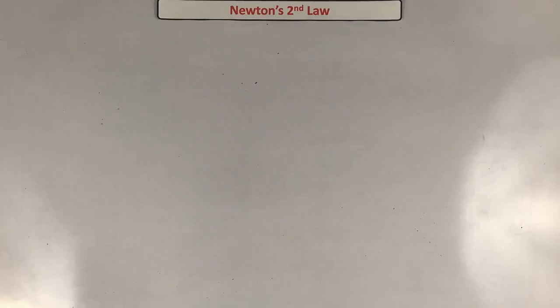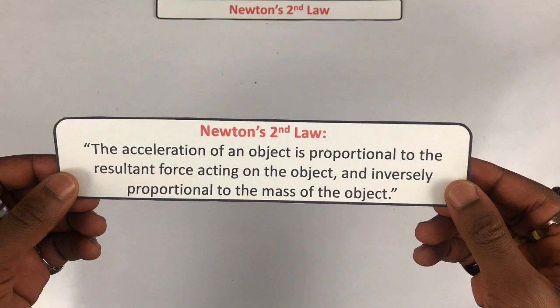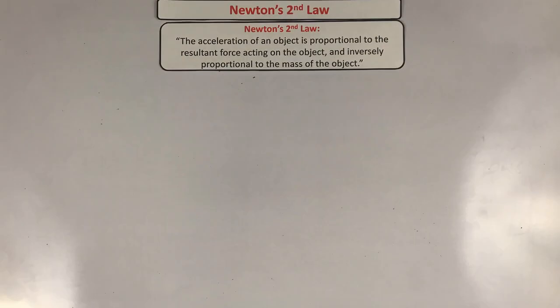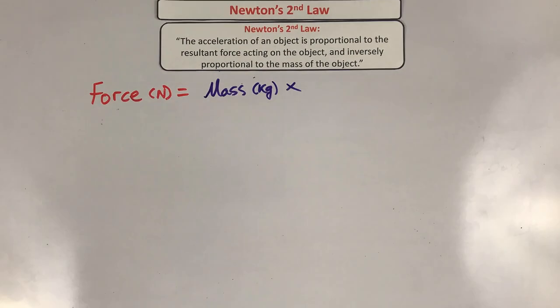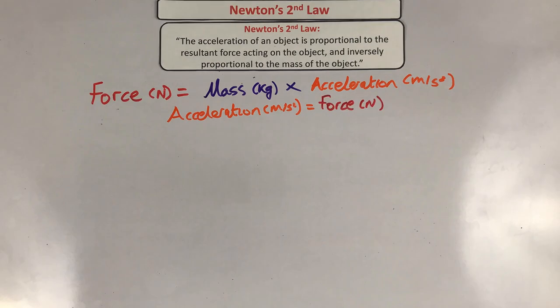Acceleration can also be worked out using Newton's second law of motion, which you need to memorize. This law states that the acceleration of an object is proportional to the resultant force and inversely proportional to the mass. This is written as: force in newtons equals mass in kilograms times acceleration in meters per second squared, which can be rearranged to give acceleration equals force divided by mass.